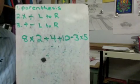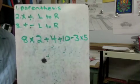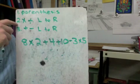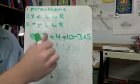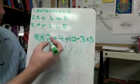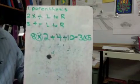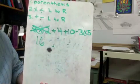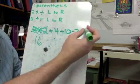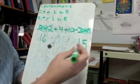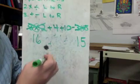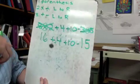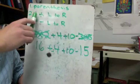The next problem is eight times two, plus four, plus ten, minus three times five. Parentheses — we don't have any. Multiplication and division from left to right: I go through and find all multiplications. I've got a multiply here and a multiply here; the others are add, add, subtract. Eight times two is sixteen — cross that out. Three times five is fifteen — cross that out and put the answer below. Then bring all the other numbers and symbols straight down: plus four, plus ten, minus fifteen.